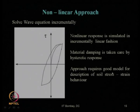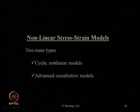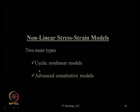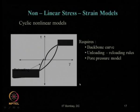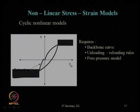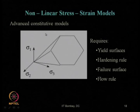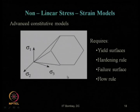This approach requires a good model to understand the stress-strain behavior. There are two major types of models: one is the cyclic non-linear model, and another is the advanced constitutive model. The cyclic non-linear model can be obtained from a lab test by knowing the backbone curve, unloading-reloading rule, and the pore pressure model. For the advanced constitutive model, the yield surface, hardening rule, failure surface, and flow rule must all be available.